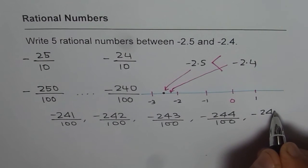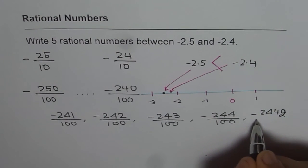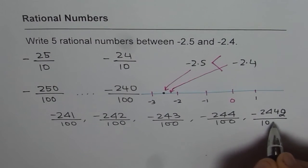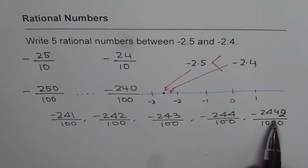How about 1000? Minus 2402 over 1000. Now, that number is also between these two numbers. Do you get the point?